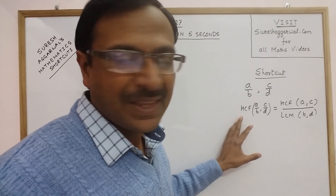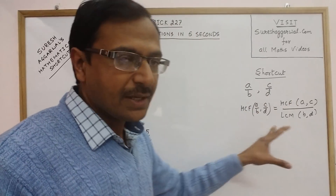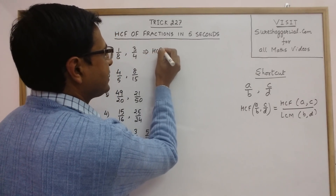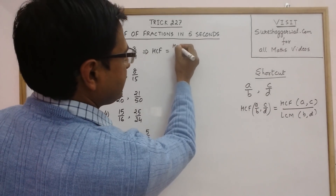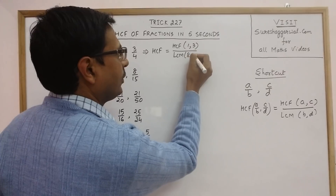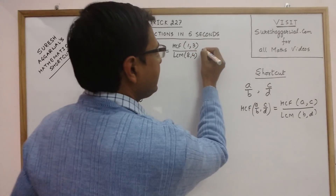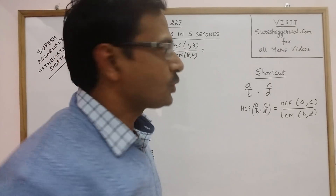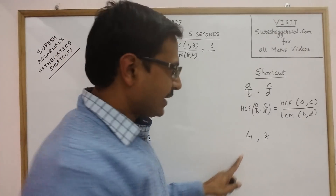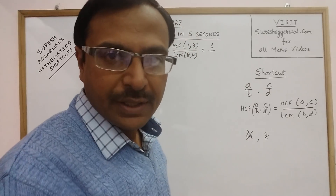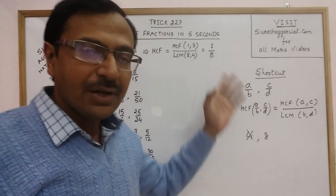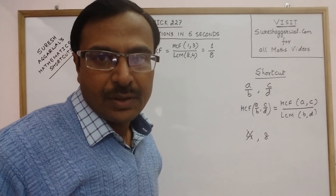Now let us understand this using a simple example: 1/8 and 3/4. The HCF will be the HCF of the numerators, that is 1 and 3, over the LCM of the denominators, that is 8 and 4. Now 1 and 3 have no common factor, so the HCF is 1. And since 4 divides 8 exactly, the LCM of 4 and 8 is 8. So the HCF of 1/8 and 3/4 is 1/8.